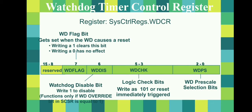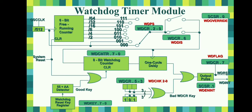Another set of registers is the watchdog flag register. For example, if you powered up your DSP board, this register can distinguish whether you have performed a normal power-on reset or triggered a reset using the watchdog. If the watchdog flag equals 0, that means you have performed a normal power-on reset; if it is written to 1, a watchdog reset has happened. Using this set of registers you can control the watchdog timer module.